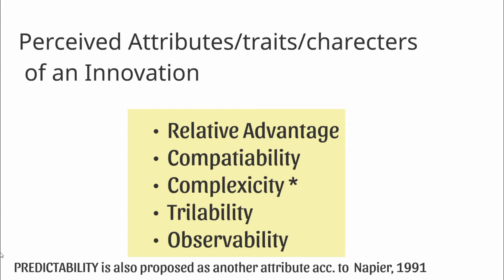Like that, a farmer or farming community perceives any kind of innovation by all these traits. Along with relative advantage, compatibility, complexity, triability, and observability, predictability is also proposed as an additional attribute of innovation by Napier in 1991.